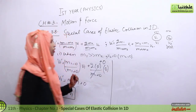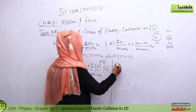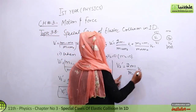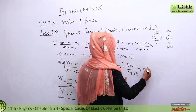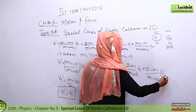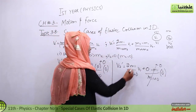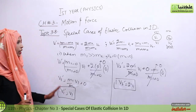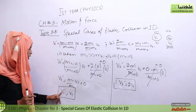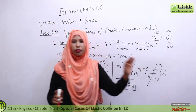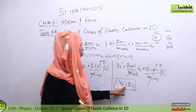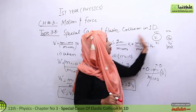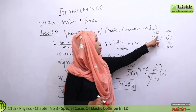Now let's solve for v2'. We get 2m1 over (m1 plus zero) times v1, which gives 2m1 over m1 times v1 equals 2v1. The second term involves zero minus m1 over m1 into zero (since v2 equals zero), giving zero. Therefore v2' equals 2v1. When a heavy body collides with a lighter stationary body, v1' equals v1 — the heavy body continues at the same velocity — and v2' equals 2v1, the lighter body moves at twice the initial velocity.